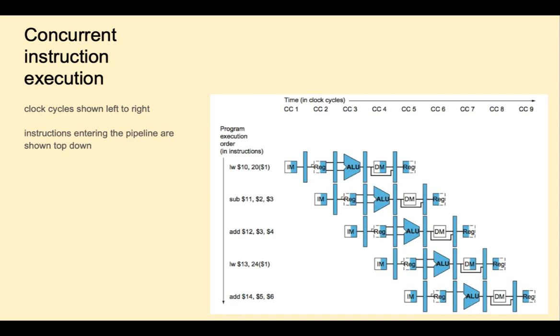This concurrent execution is a form of parallelism called ILP, instruction level parallelism. Notice that we're getting parallelism on a single processor. Later in the course, we'll talk about other forms of parallelism you can get with multi-core processors.